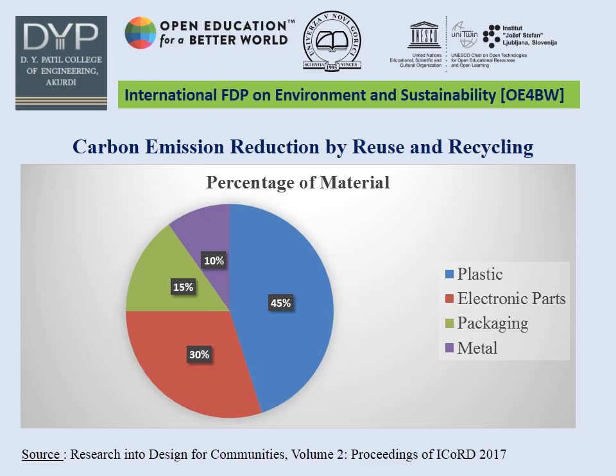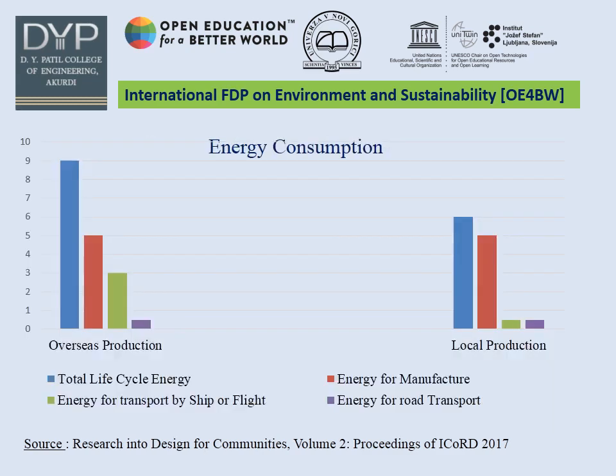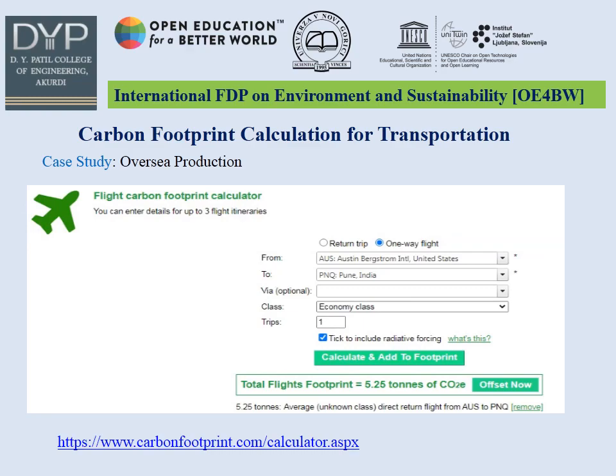From the construction of the gas sensor, the percentage of material is represented in a pie chart. With replaceable parts, the sensor can be reused and the service life is extended, and the sensor can also be sent for raw material extraction. The bar chart represents a comparative study of life cycle energy for overseas production versus local production. Logistic emissions contribute more in the case of electronic devices while estimating life cycle energy.